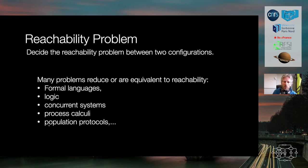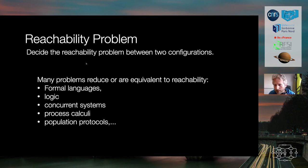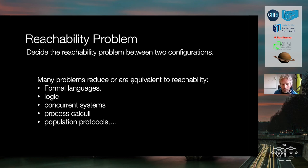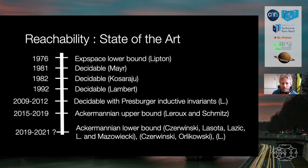Note that the reachability problem is a decision problem: given two configurations, does there exist an execution from the initial one to the final one? This is not the same as computing the reachability set — naturally, if we can compute the set we can decide the question, but they are different problems. This problem is important because many other problems reduce to it or are equivalent to it, so it is a central and difficult problem.